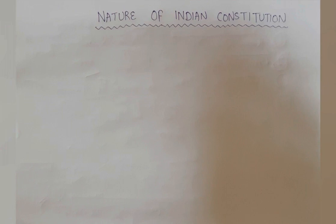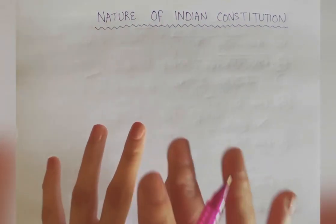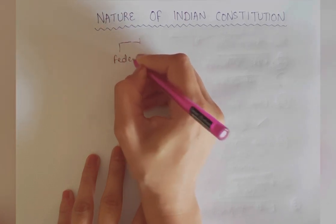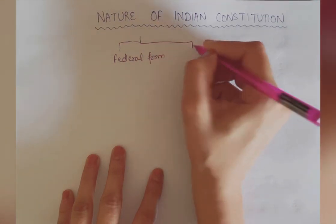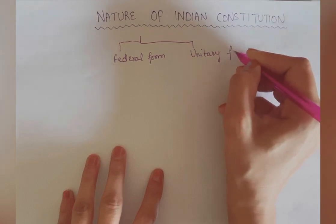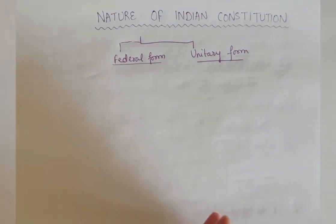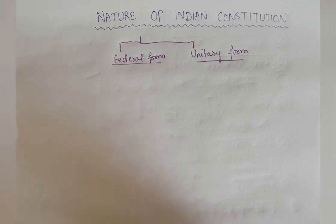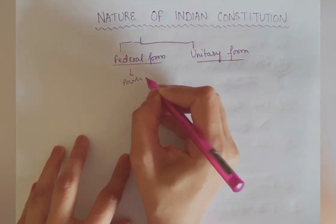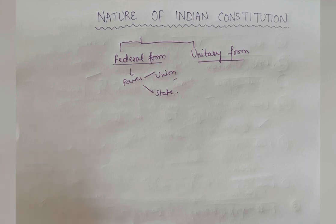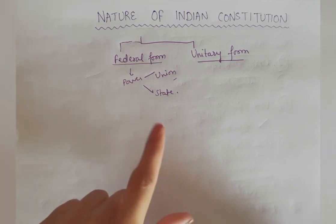The form of government in any country can be of two types. First is the federal form of government and the second one is the unitary form of government. In every country either you will get a unitary form or a federal form. In a federal form of government, power is distributed between center and state in terms of the Union List, State List, and Concurrent List, given in the Seventh Schedule.